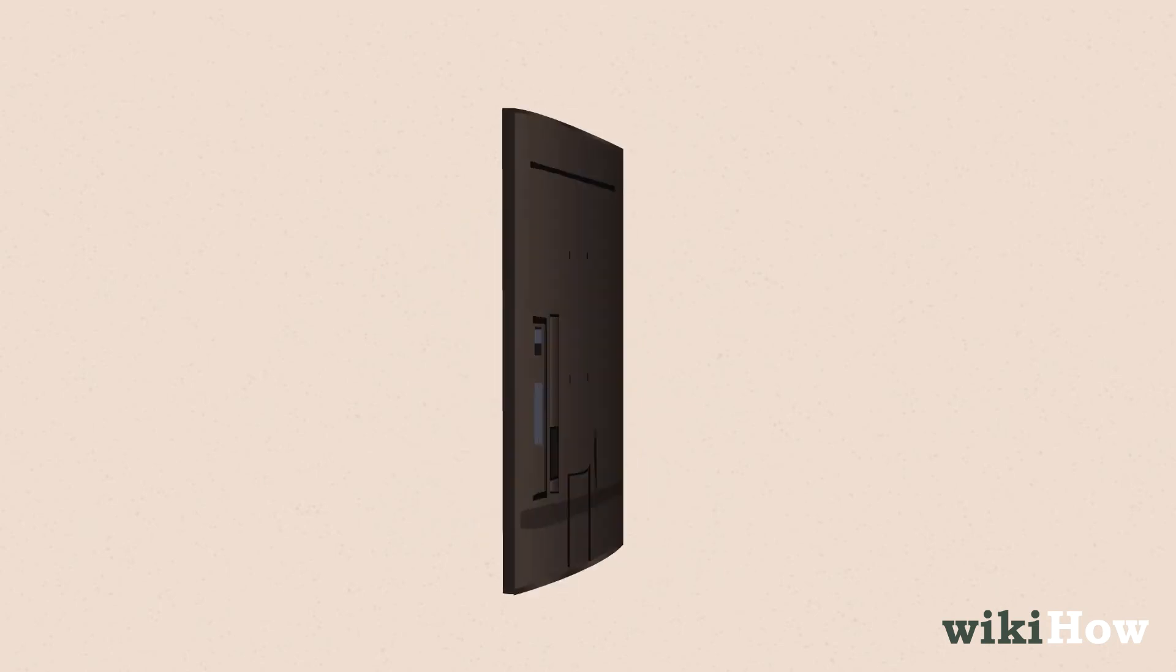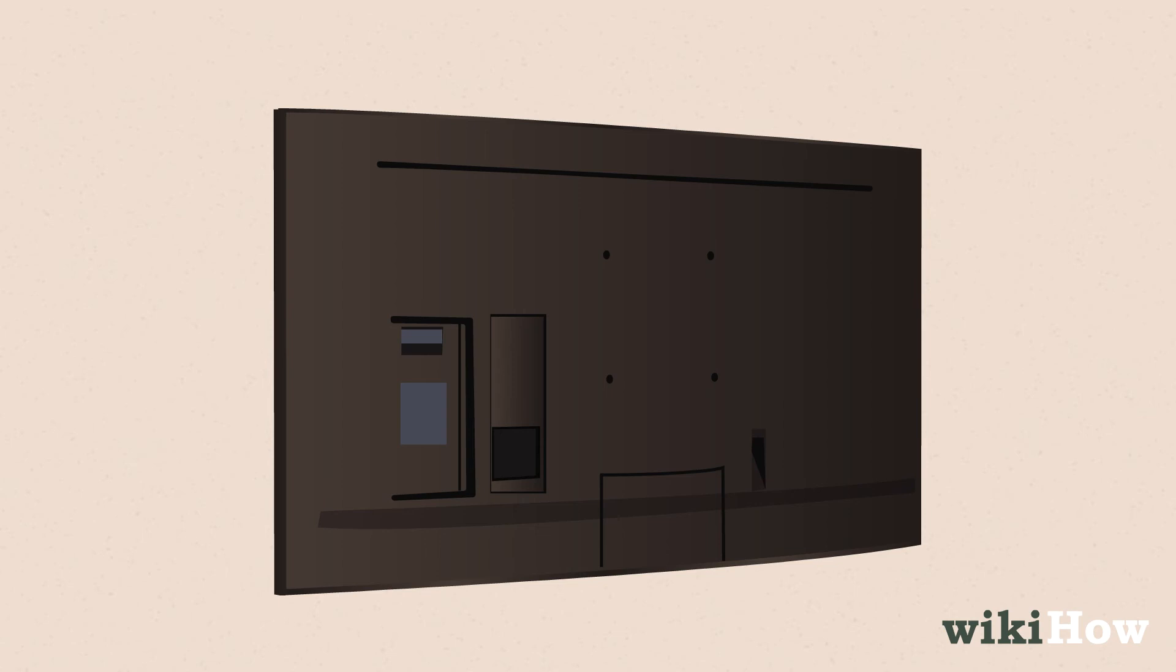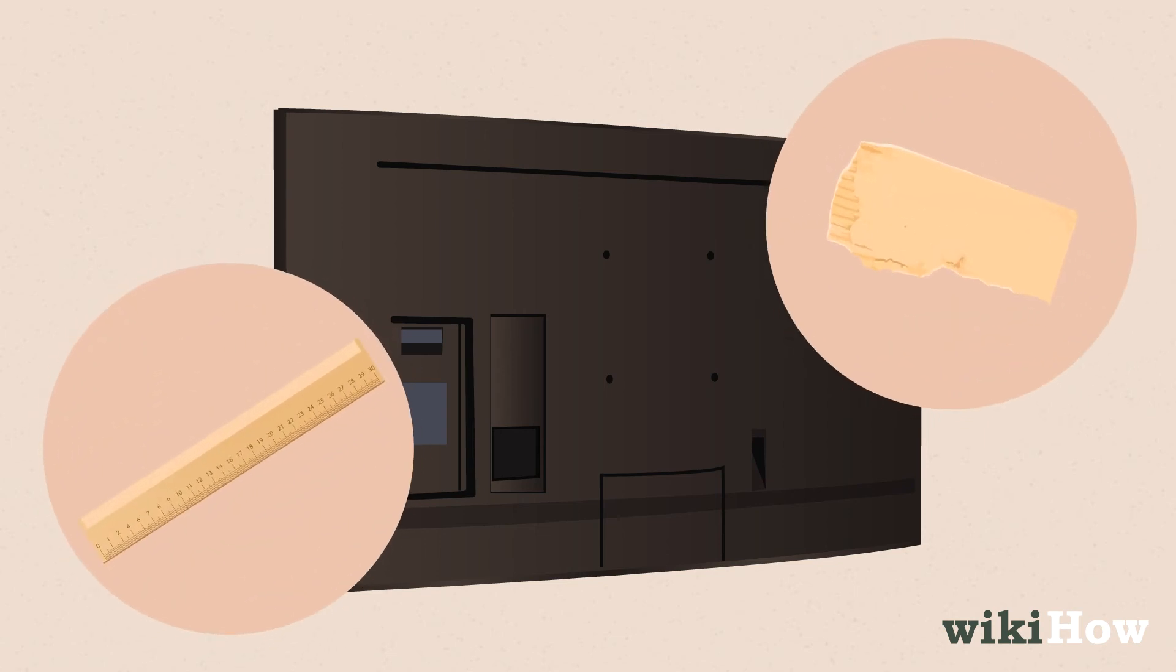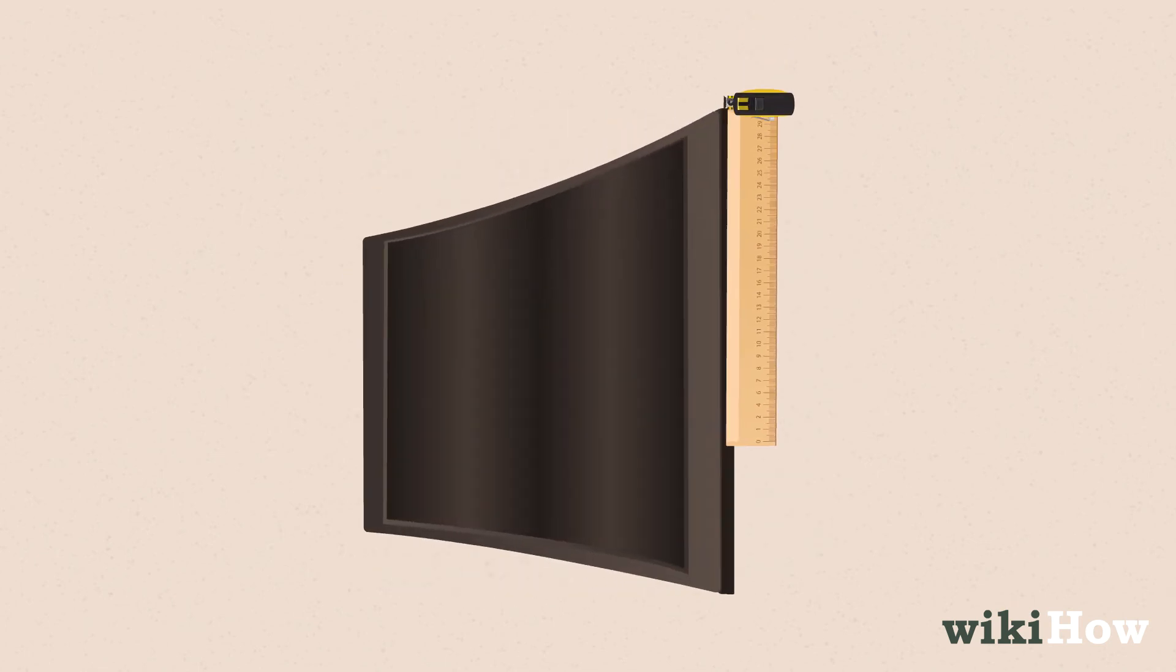Getting the depth can be a little trickier since most TVs have a curved back. It may help to put something flat against the back part of the TV, such as a ruler or a piece of cardboard. Then you can measure from the front of the screen to the top of the flat object.